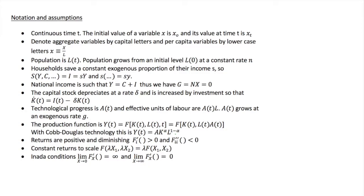The first assumption is that we have continuous time t. This means the model is a dynamic model, so variables can change over time. We assume the initial value of a variable x is given by x subscript 0, so the current period is defined as 0, and its value at time t is x_t. For example, consumption at time t is c_t, consumption in period 1 is c1, period 2 is c2, and so on.